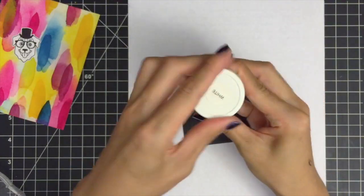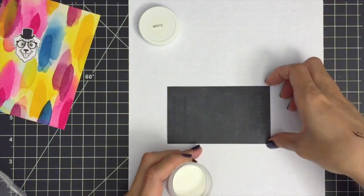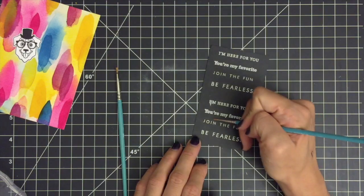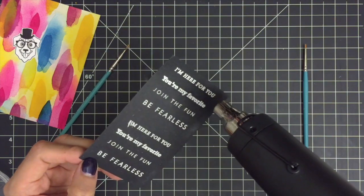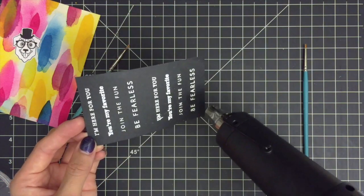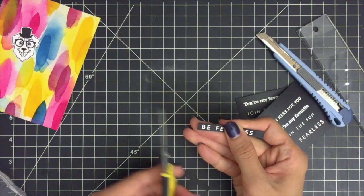I'll apply some white embossing powder and tap off the excess. I'm using my small paint brush to flick away any stray powder from sticking to unwanted areas. Then I'll heat set the sentiments with my heat tool until they are completely melted.